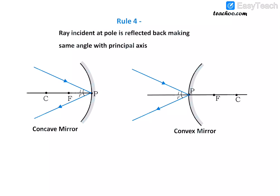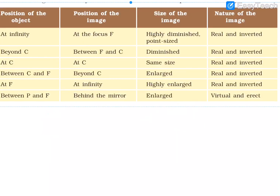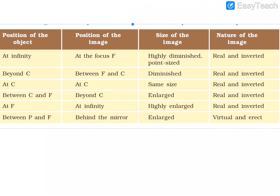Now let us discuss the image formation. In case of a concave mirror, there are six ray diagrams. As the position of the object changes, the position of the image also changes. You can see the size of the image changes from diminished to same size, enlarged, highly enlarged, and enlarged.